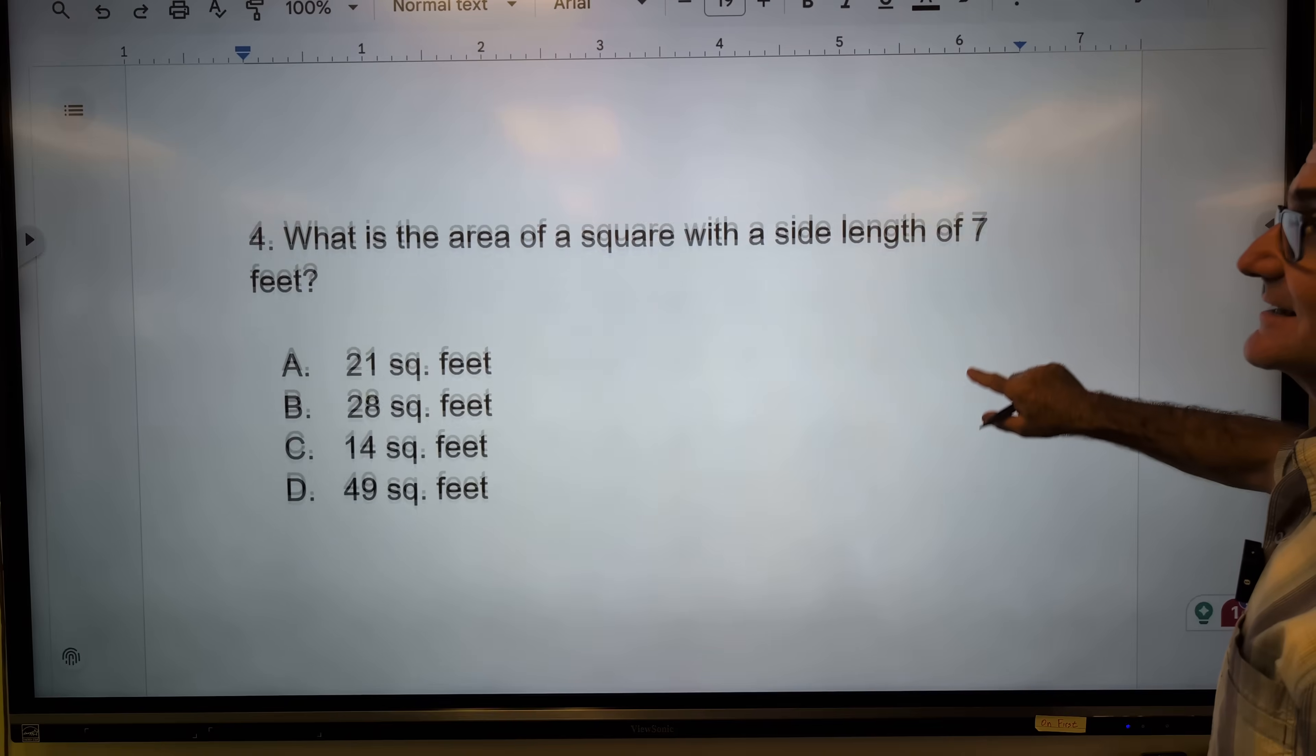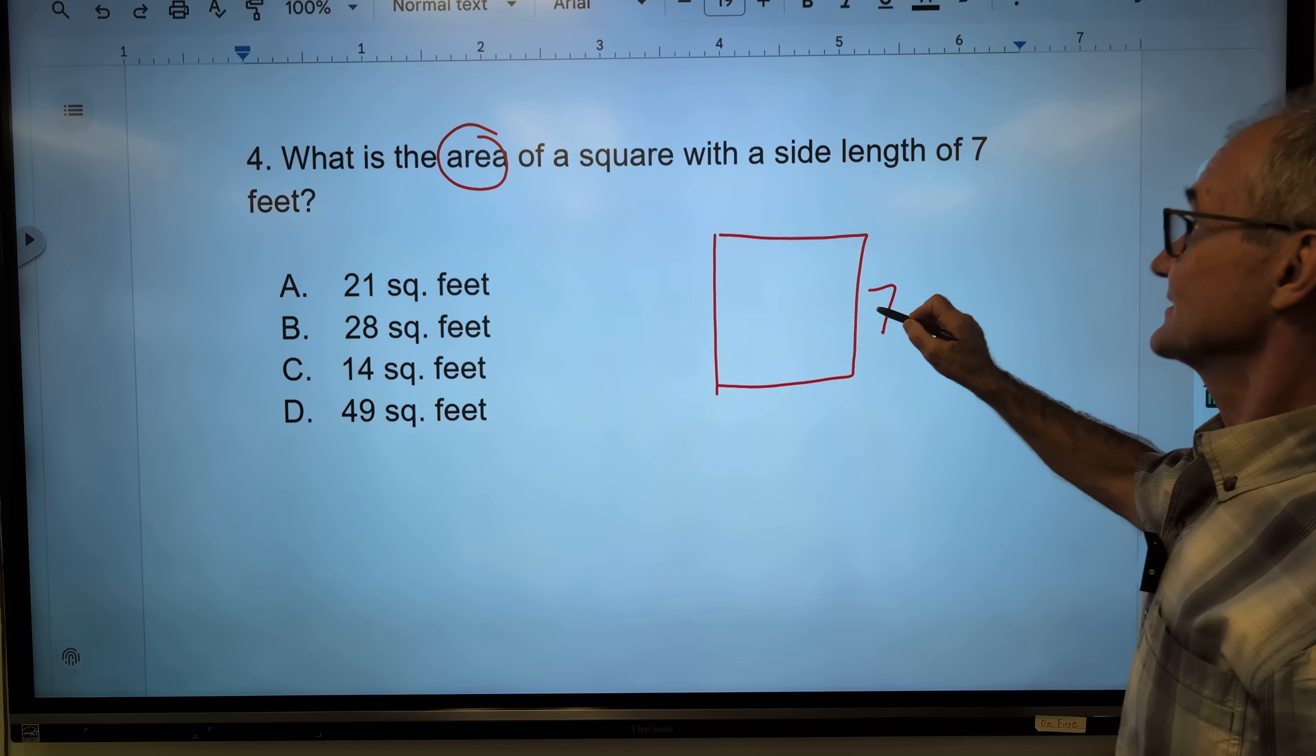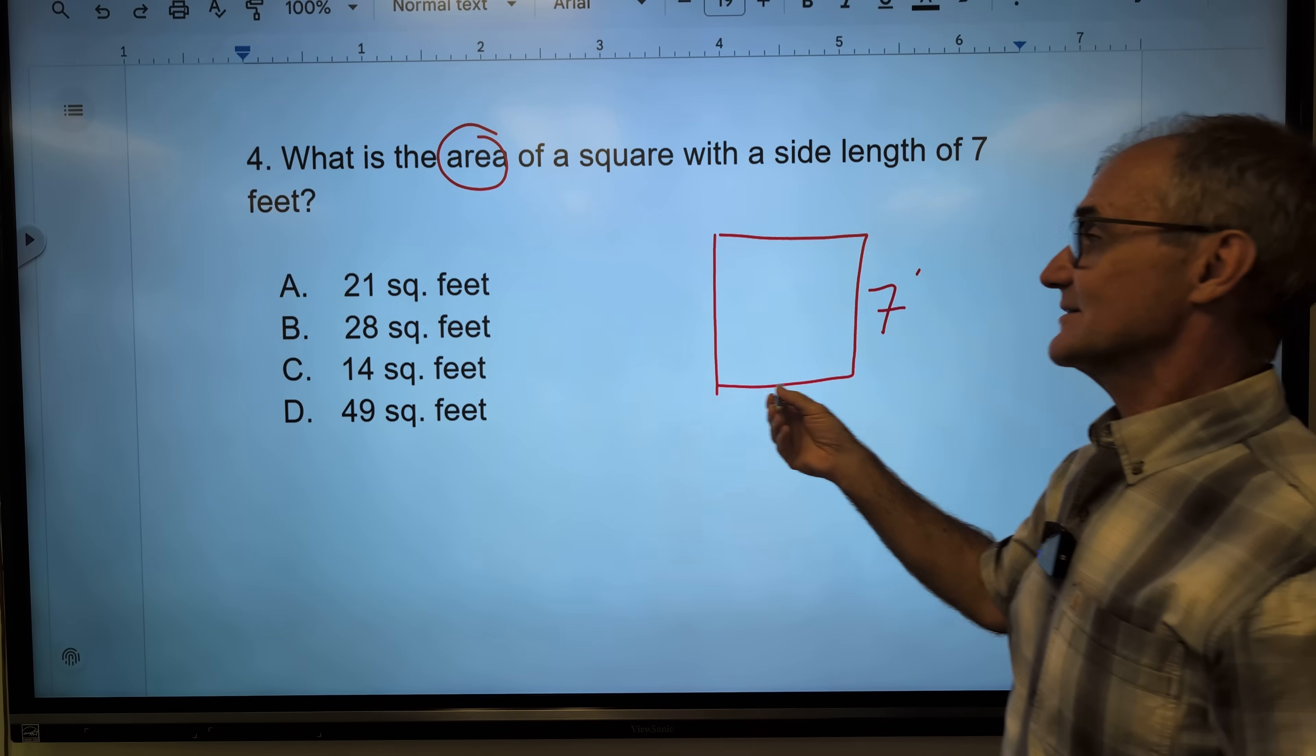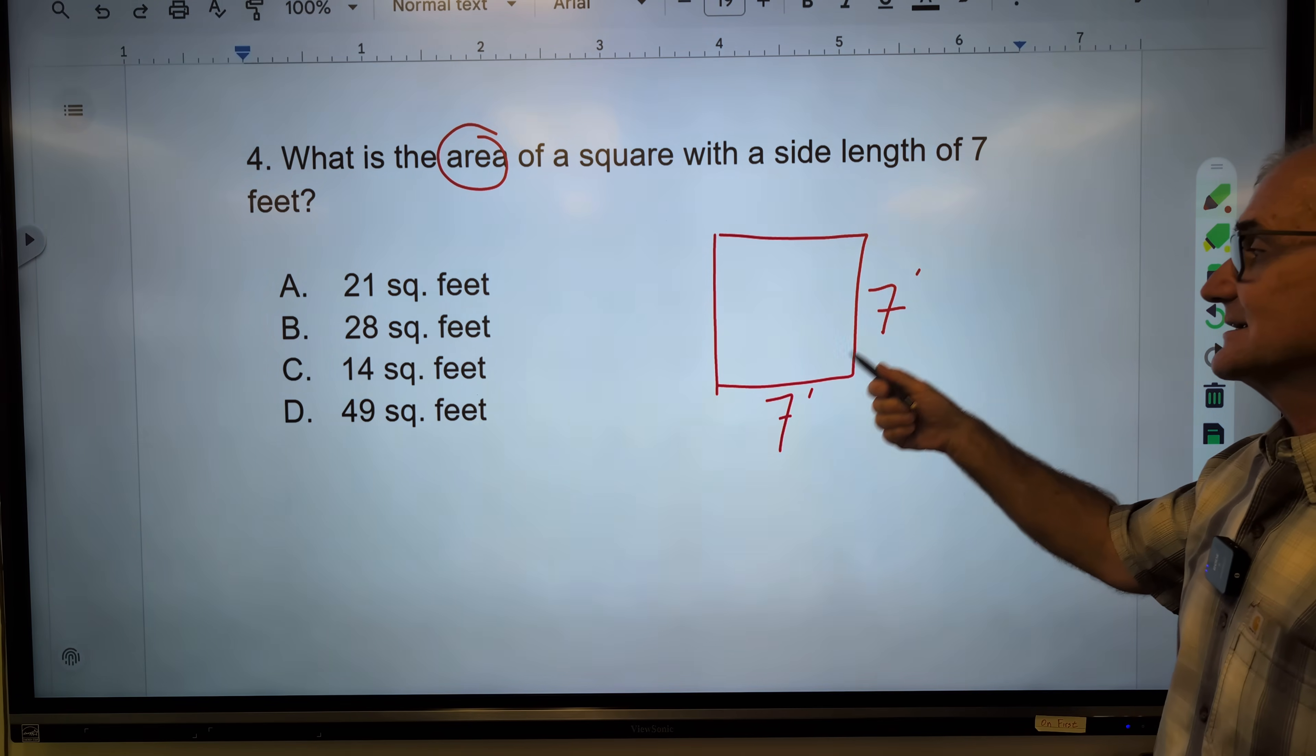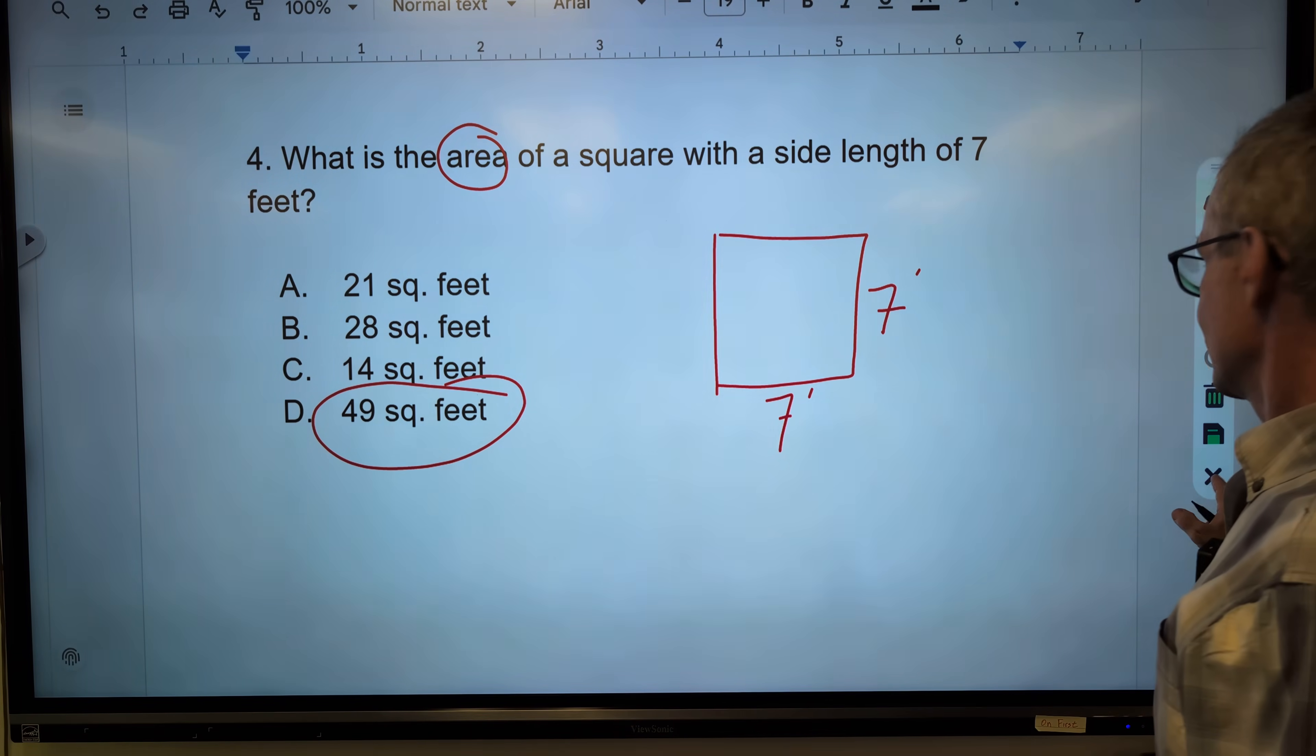Moving right along to number 4. What is the area - this is the key word - of a square with a side of 7 feet? The check is, are you going to add up 4 sevens, the perimeter? That's not what it's asking you for. It is asking you for area. So it is base times height. 7 times 7 is 49. Feet times feet is square feet. Correct units are square feet. Correct answer, answer D.